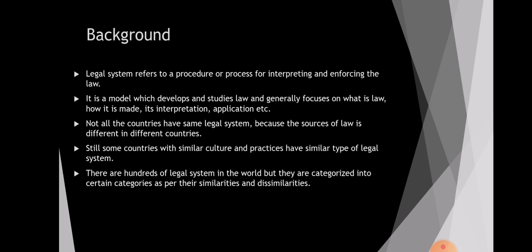Not all countries have the same legal system because the sources of law differ. Some countries may have legislation as the source of law, whereas some countries have precedent as a source of law, and in some countries religious texts can be considered as a source of law. Different countries have different legal systems, but similarities can still be found in the practices and culture of some legal systems.